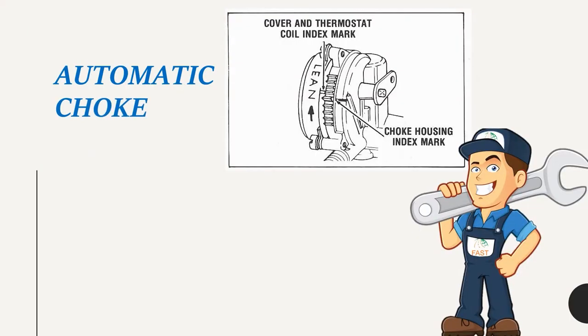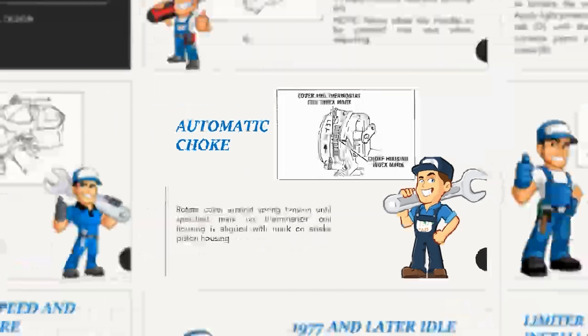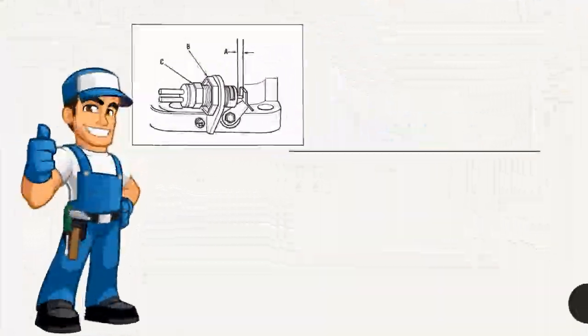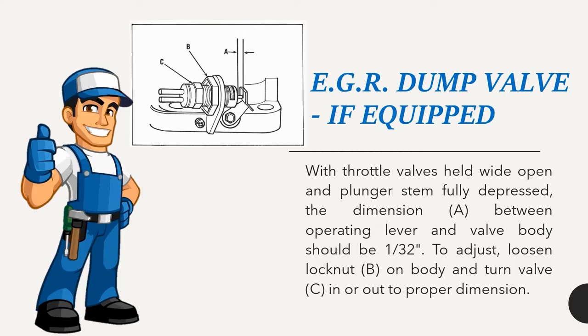Automatic choke: Rotate cover against spring tension until specified mark on thermostatic coil housing is aligned with mark on choke piston housing. EGR dump valve (if equipped): With throttle valves held wide open and plunger stem fully depressed, the dimension A between operating lever and valve body should be 1/32-inch. To adjust, loosen lock nut B on body and turn valve C in or out to proper dimension, then tighten lock nut.